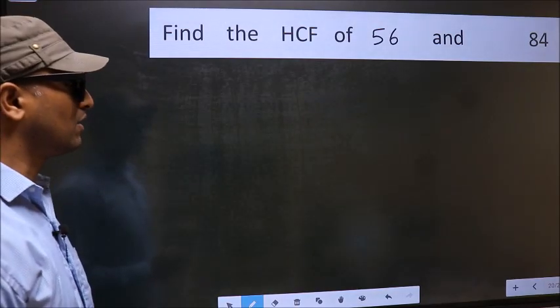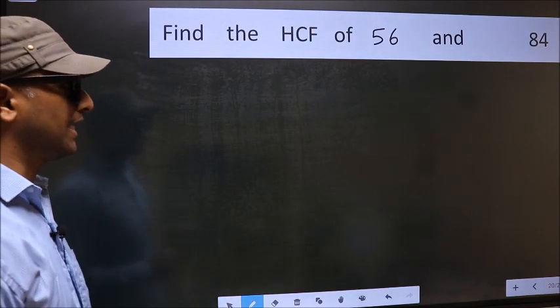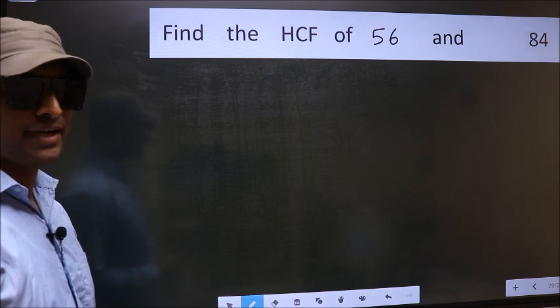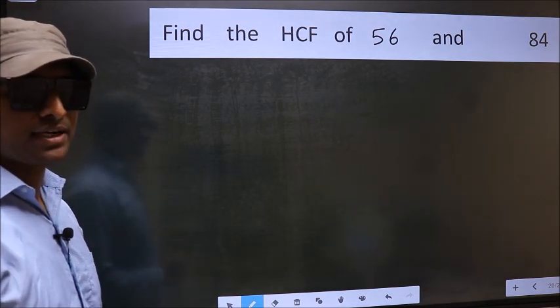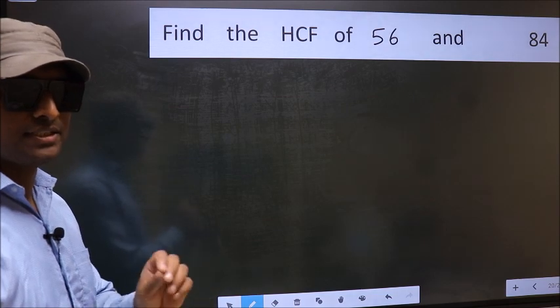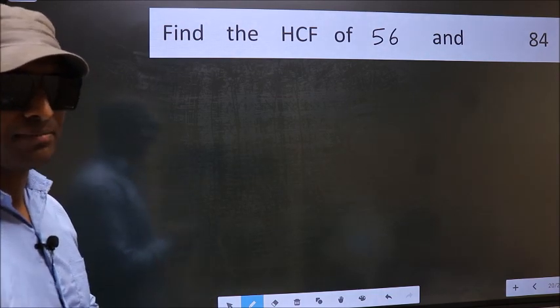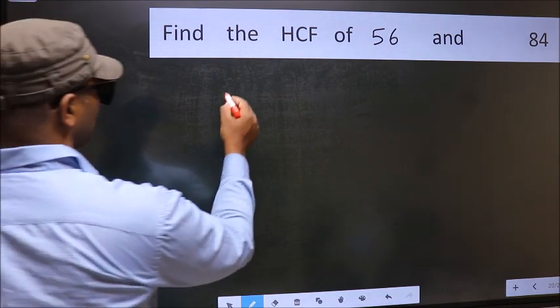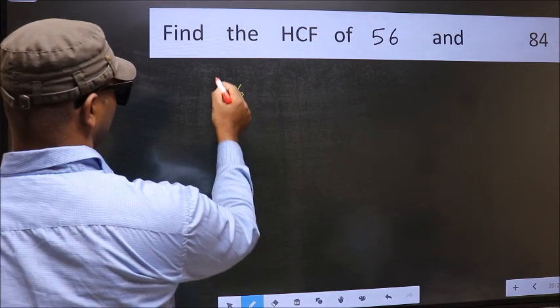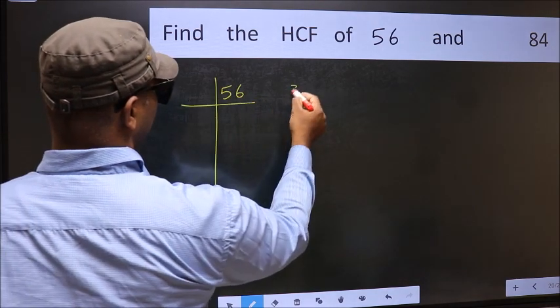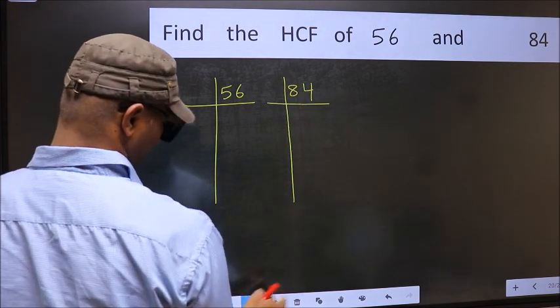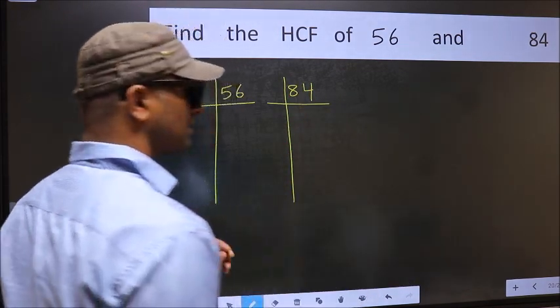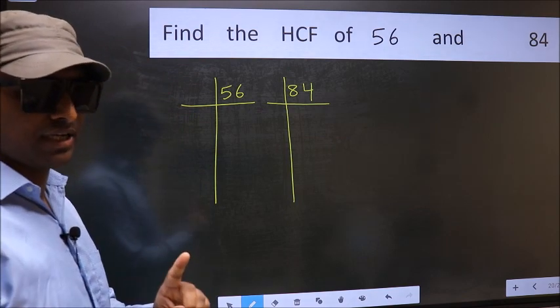Find the HCF of 56 and 84. To find the HCF, we should do the prime factorization of each number separately. What I mean is 56 and 84. This is your step 1.